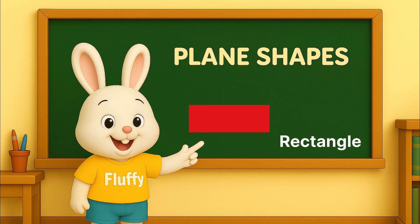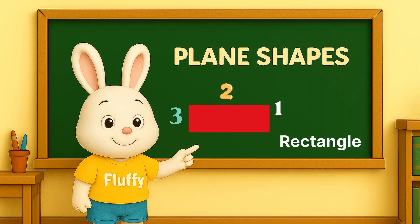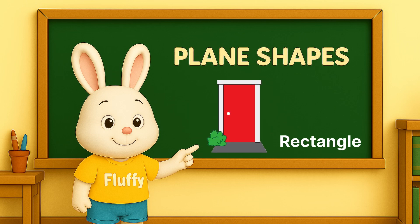Rectangle. A rectangle has four sides — one, two, three, four. The opposite sides are equal, like a door.